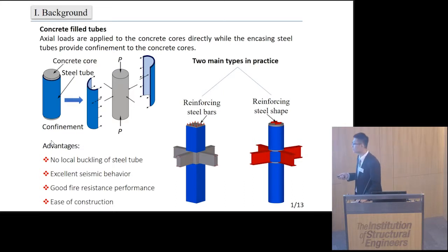First, there's no local buckling of the steel tube, and the strength of thin-walled high-strength steel tube can be fully utilized. Another advantage is the excellent seismic column performance due to the effective confinement, even when high-strength concrete is used. The third advantage is good fire-resistant performance.